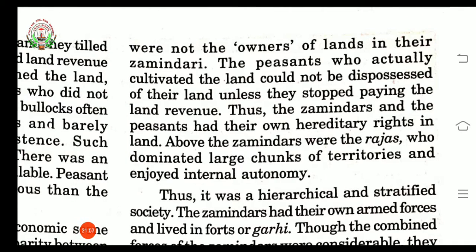In the Mughal period, at the time of Akbar, the society was hierarchical or stratified. Hierarchical or stratified means a system organized in layers or some order. Zamindars had their own armed forces and they lived in forts or gharri. The zamindars were spread across a great area, all separated and working in different directions, so it was difficult to gather them all at one place at one time.